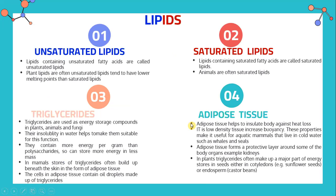Unsaturated lipids are lipids containing unsaturated fatty acids. Plant lipids are often unsaturated lipids and tend to have lower melting points than saturated lipids. Saturated lipids contain saturated fatty acids and are often found in animals. Triglycerides are used as energy storage compounds in plants, animals, and fungi. They contain more energy per gram than polysaccharides, so they can store more energy in less mass.